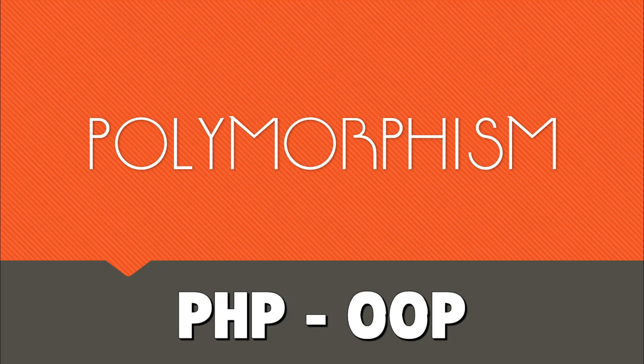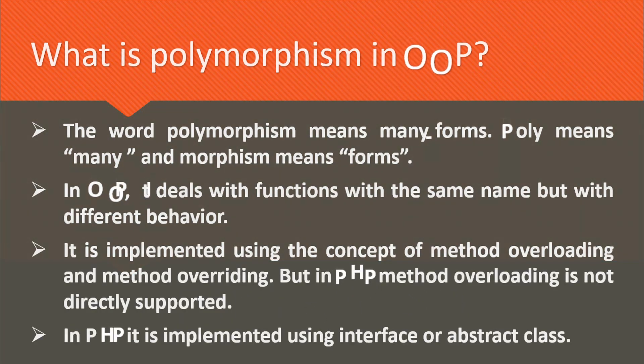Before going to see actual coding examples, let's first understand what is polymorphism in object oriented programming. The word polymorphism means many forms — poly means many and morphism means forms. In object oriented programming it deals with functions with the same name but with different behavior. It is implemented using method overloading and method overriding, but in PHP method overloading is not directly supported, so it is implemented using interface or abstract class.